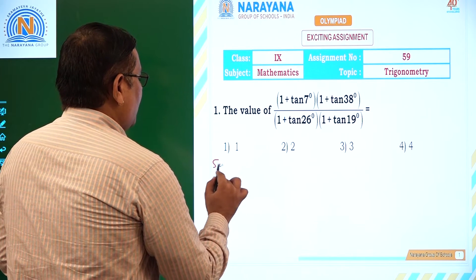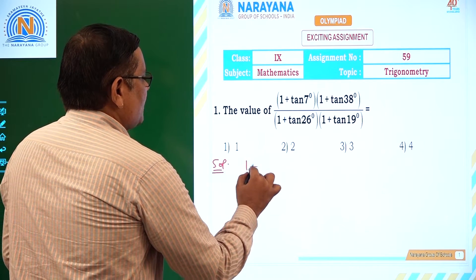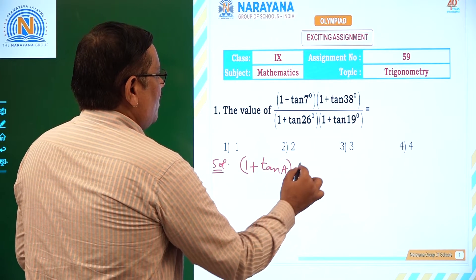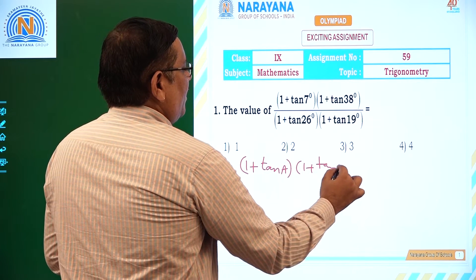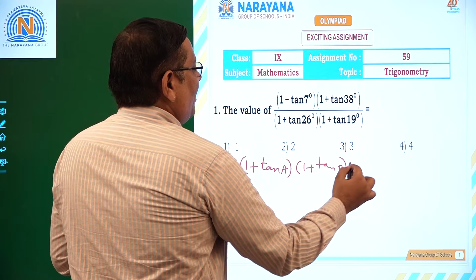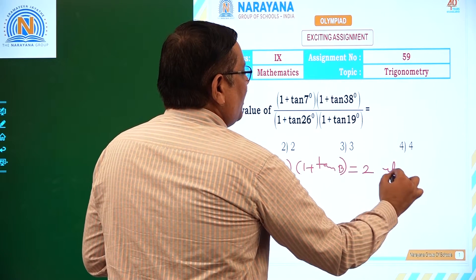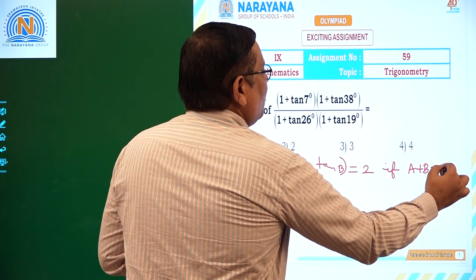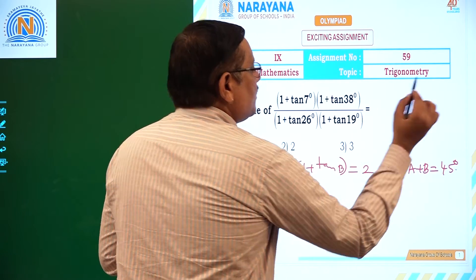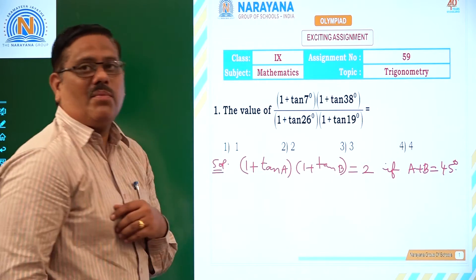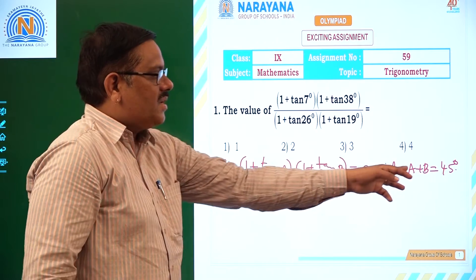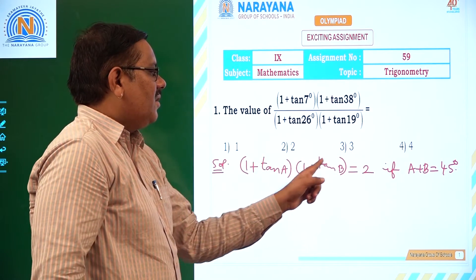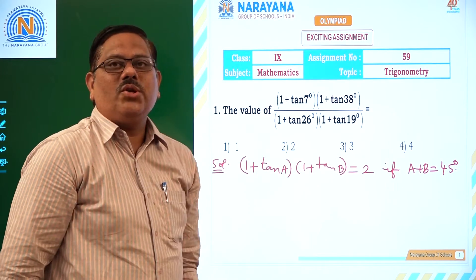What is that result? If A plus B equals 45 degrees, then (1 plus tan A) times (1 plus tan B) will be equal to 2. This is a very important condition.